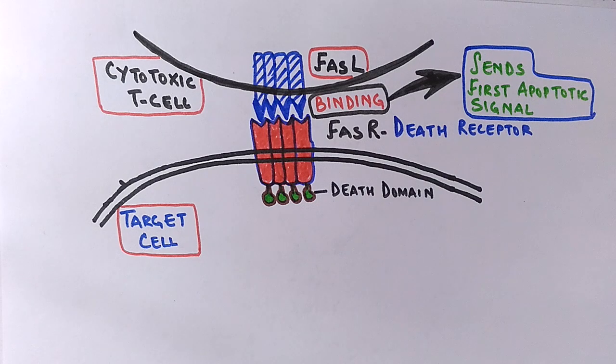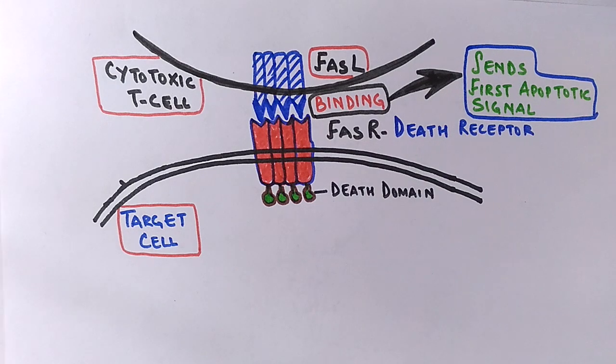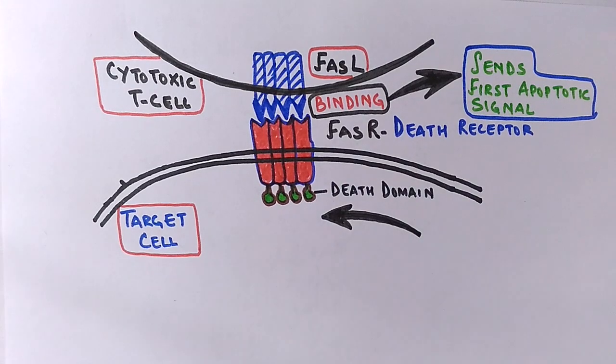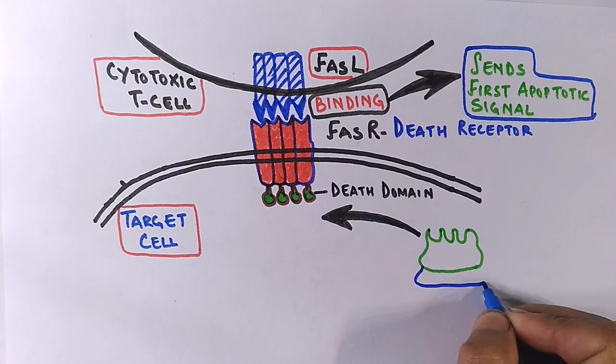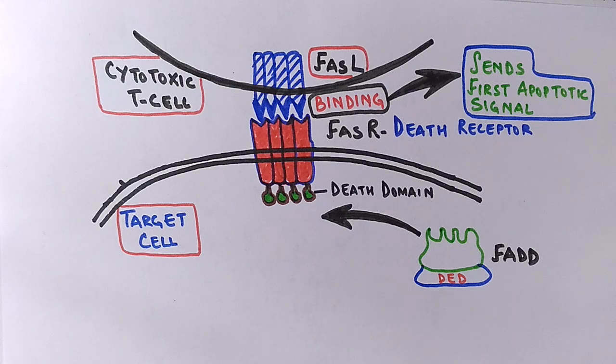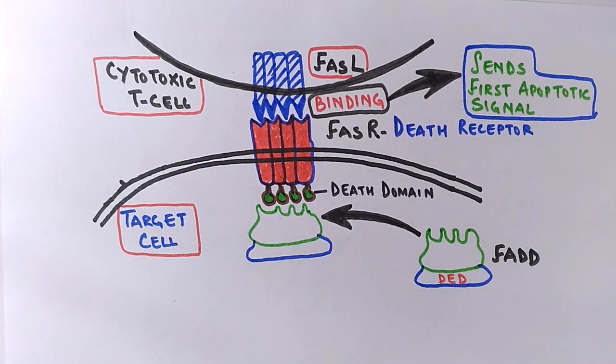So after that binding and interaction between ligand and receptor molecule, there is a recruitment of FAD adapter molecule. FAD stands for FAS associated protein with death domain, and this FAD molecule comes in and binds towards the death domain of FAS receptor like this.